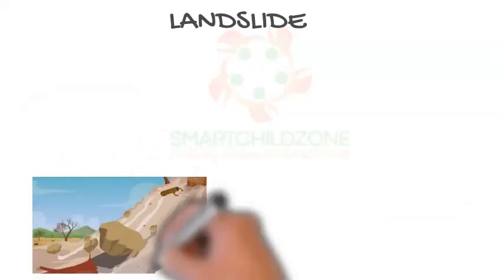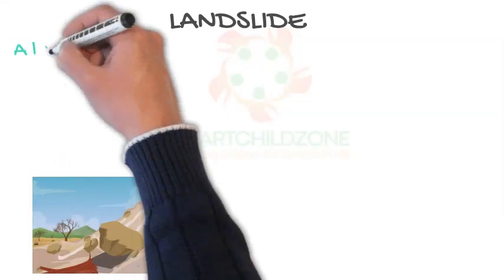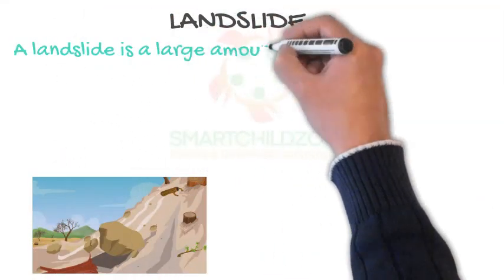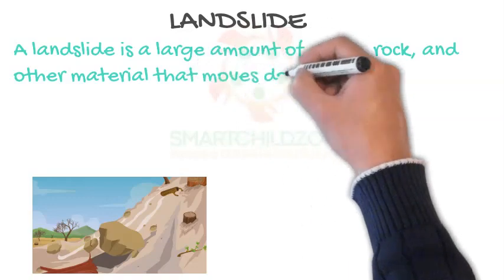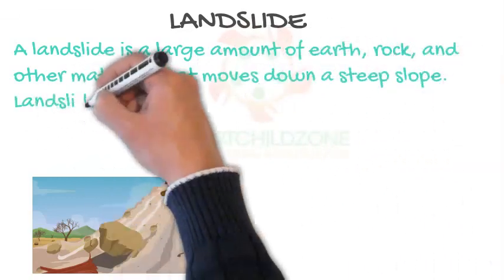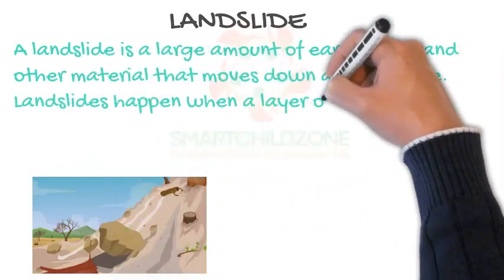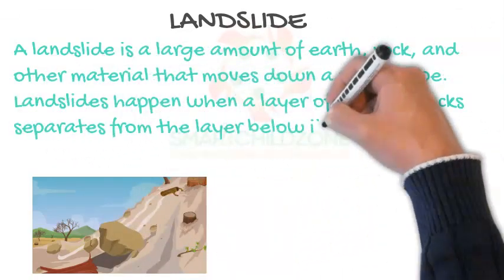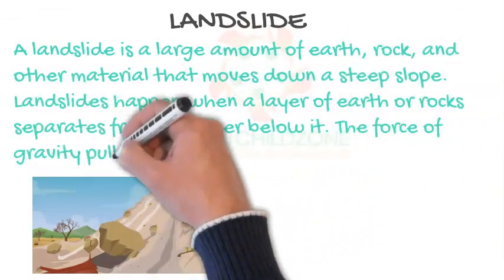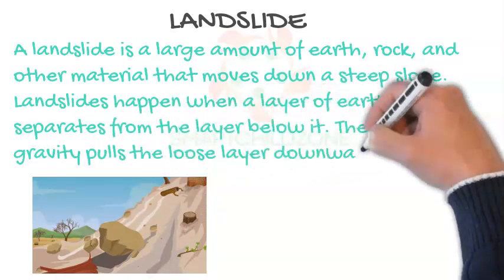A landslide is a large amount of earth, rock, and other material that moves down a steep slope. Landslides happen when a layer of earth or rock separates from the layer below it. The force of gravity pulls the loose layer downward.